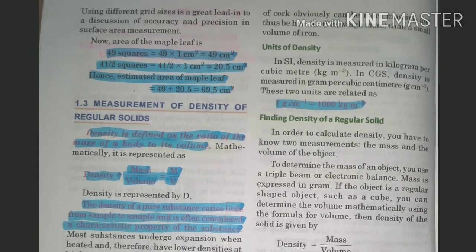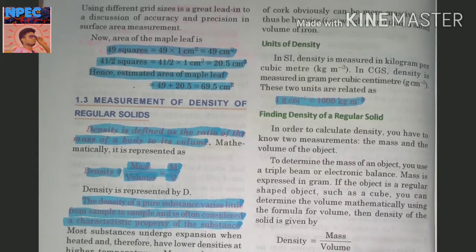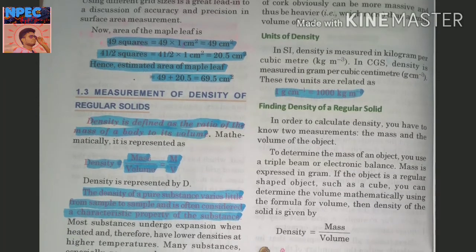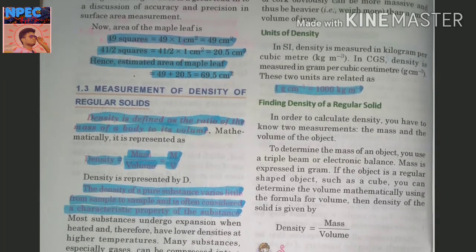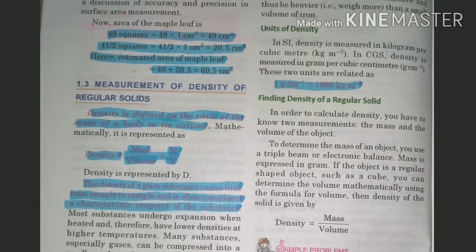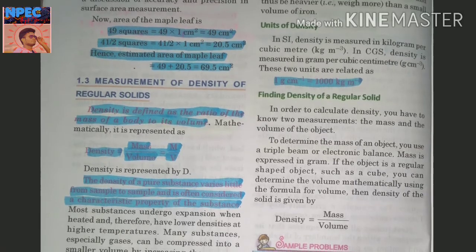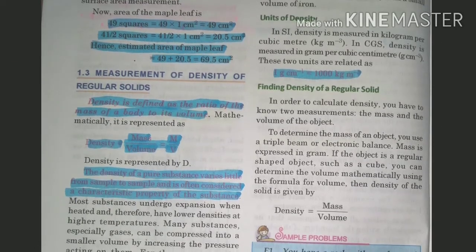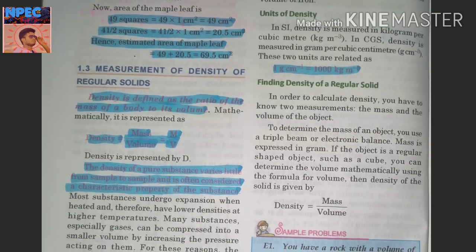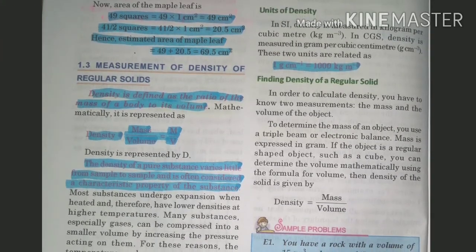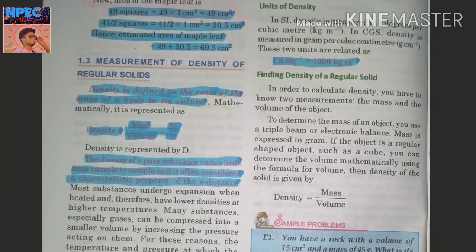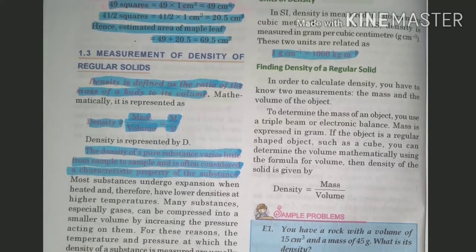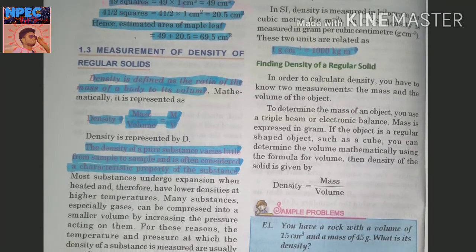Units of density: In SI, density is measured in kilogram per cubic meter (kg/m³). In CGS, density is measured in gram per cubic centimeter (g/cm³). These two units are related as: 1 gram per centimeter cube equals 1000 kg per meter cube.